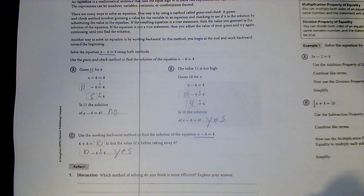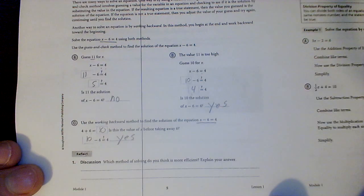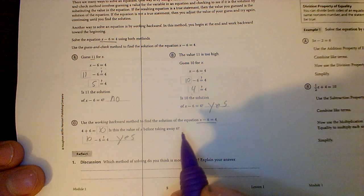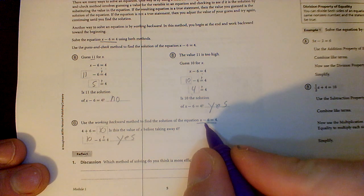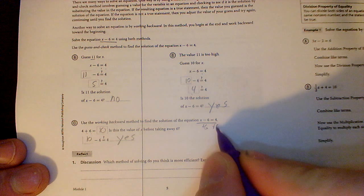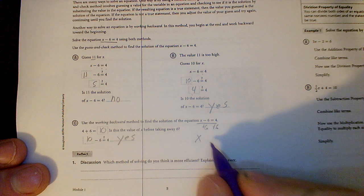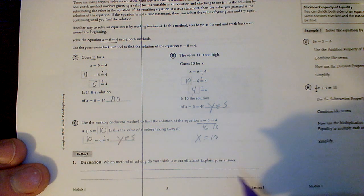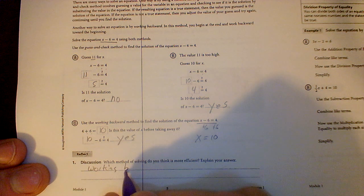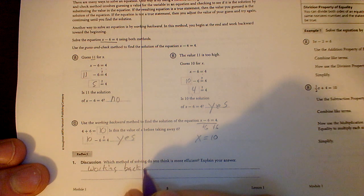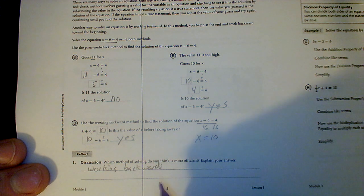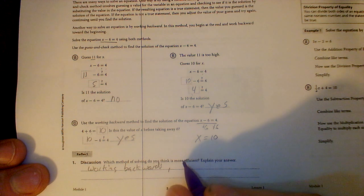Which method do you think is more efficient? Well, you know what, it's either guessing, which took me all this, or working backwards, saying, hey, you know what, I can just add 6 to both sides right here, and I'll get x by itself, and that's 10. So I would say working backwards, working backwards, and the reason it's more efficient, the reason that's more efficient, is because